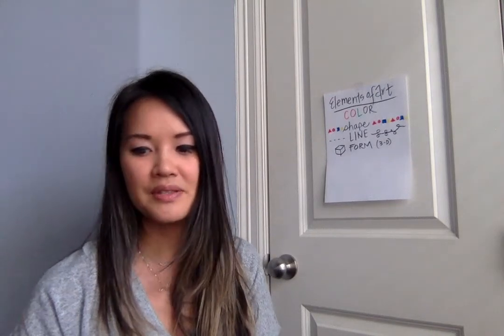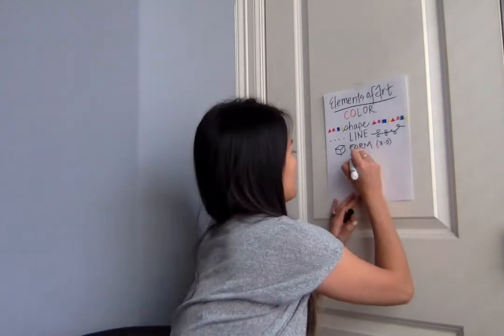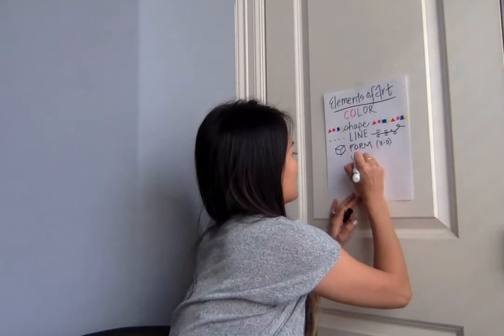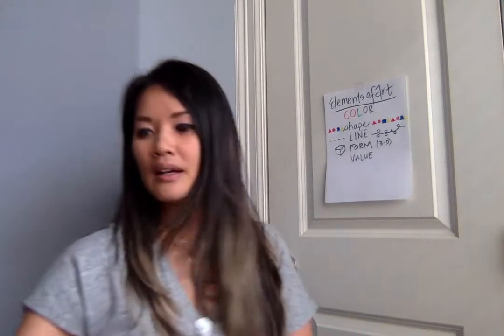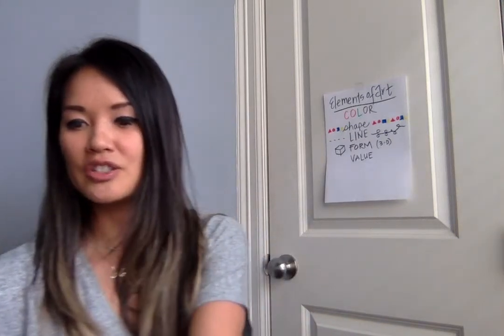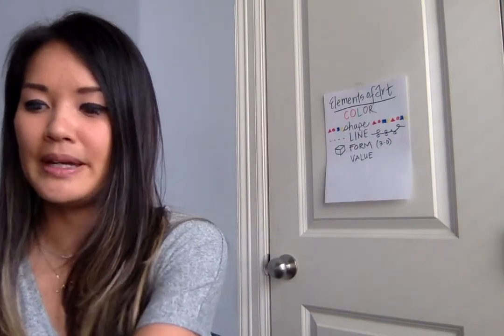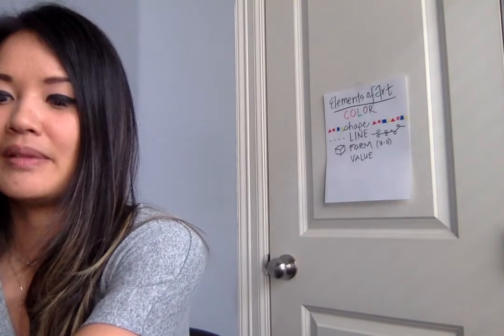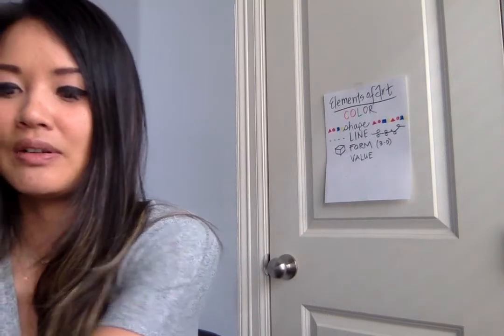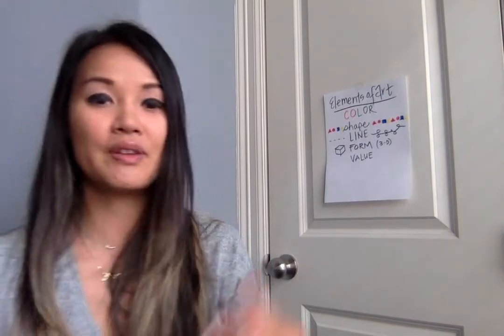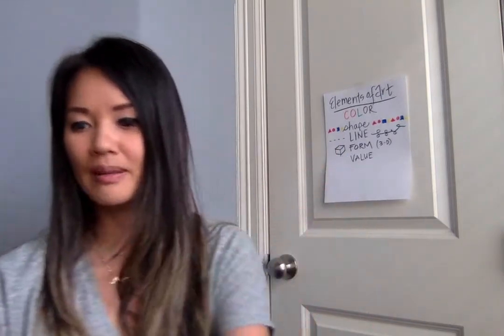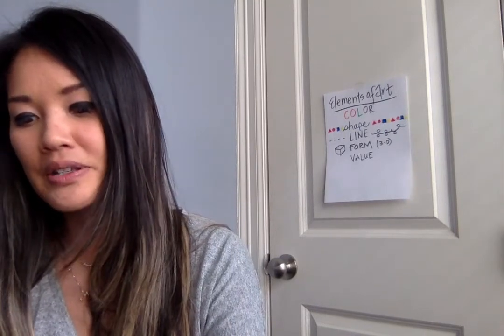Another element is value. Value is one that gets a little trickier for younger kids. Value is when things go from dark to light or light to dark — which we learned is called ombre. For this one, if you have a pencil you can just shade it in from dark to light. I have some oil pastels here.